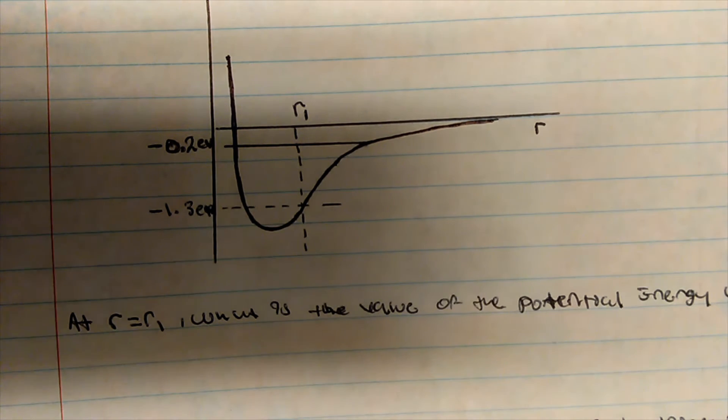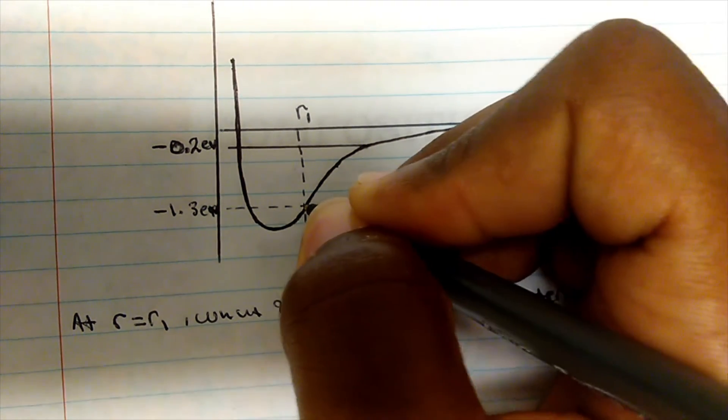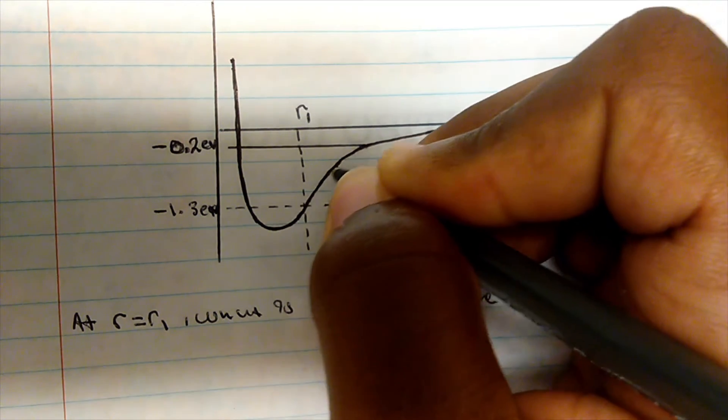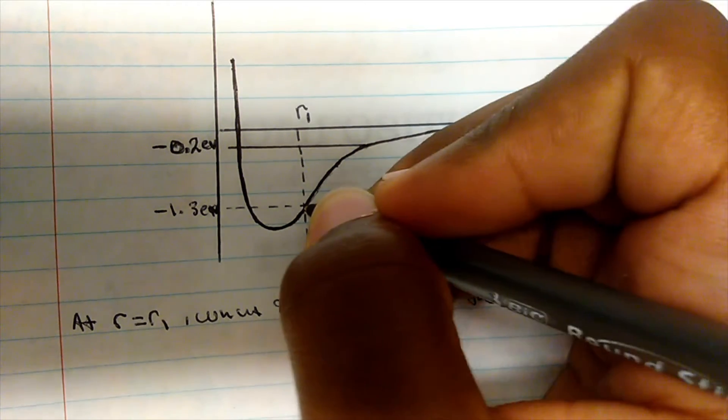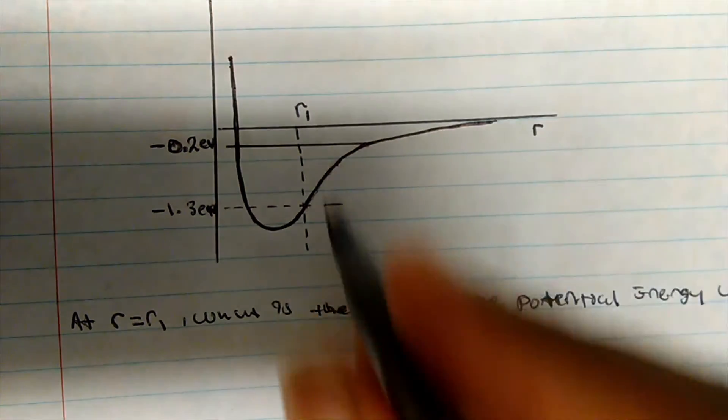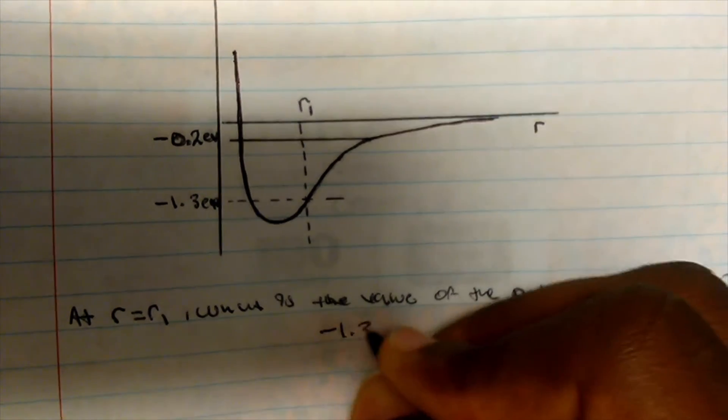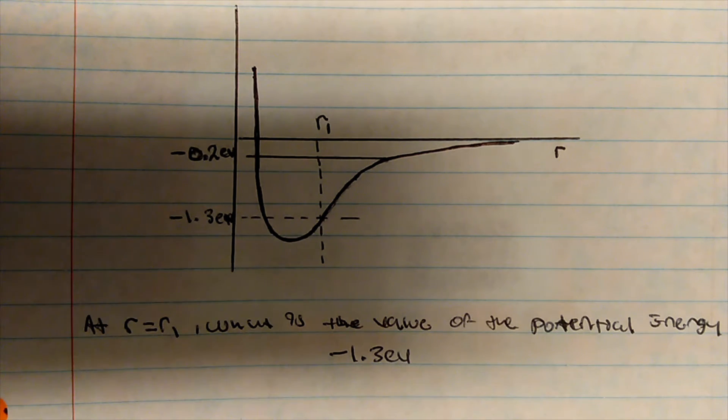So we have r1 here, and the question asks: what is the value of the potential energy U at r1? If I go down the line, r1 is where these two lines intersect. Any point on this curve is your potential energy. At r1, the potential energy is negative 1.3 eV, and it makes sense—potential energy can be negative. What we cannot have is kinetic energy being negative.